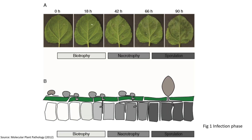Figure 1 shows the infection phase of the pathogen. Looking at the images in Figure A, from 0 hours to 18 hours, the pathogen is in the biotrophic phase. During this phase the leaf looks fairly fresh and clean. From 42 hours to 66 hours, it enters into the necrotrophic phase, whereby the pathogen releases phytotoxins and enzymes that degrade the cells of the host plant. At the 42nd hour, the leaf is gradually showing symptoms with small spots, and by the 66th hour, the lesions have become fairly visible and appear to be water-soaked lesions.